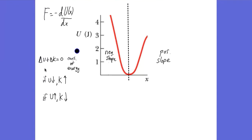Using conservation of energy — delta U plus delta K equals zero — as I go down the curve and my potential energy is decreasing, that means my kinetic energy is increasing. As I go beyond the dotted line, my potential energy is increasing, which tells me my kinetic energy is decreasing.